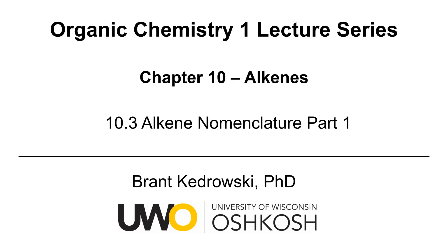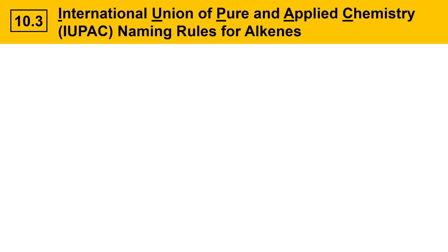Hello everyone, my name is Brant Kudrowski and this organic chemistry video covers alkene nomenclature part 1. In this video we'll introduce International Union of Pure and Applied Chemistry naming rules for alkenes. We'll start with alkenes that don't display stereoisomerism — in other words, alkenes that can't exist as stereoisomers.